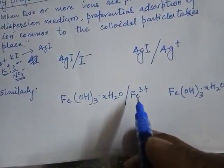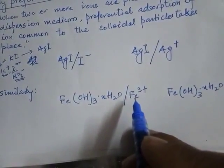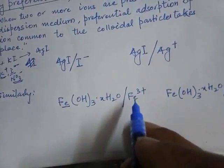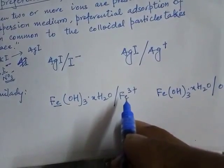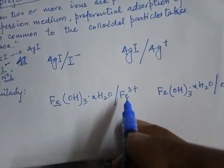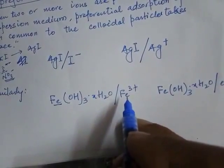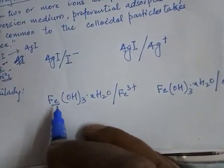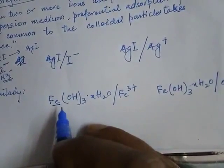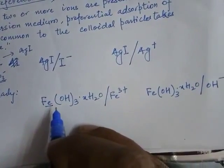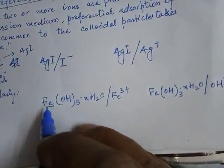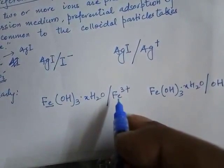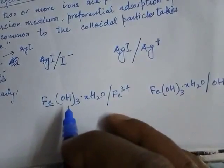Iron hydroxide sol preferentially adsorbs Fe³⁺, which is common to the sol particle. Several other ions are present in the solution — such as Cl⁻ — since it is prepared by mixing FeCl₃ with water or NaOH. But since iron is a component of the sol particle, the ferric ion Fe³⁺ is adsorbed on its surface.